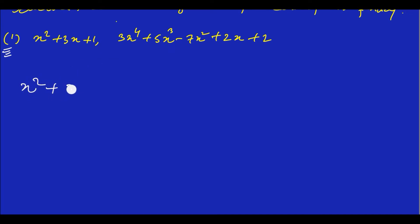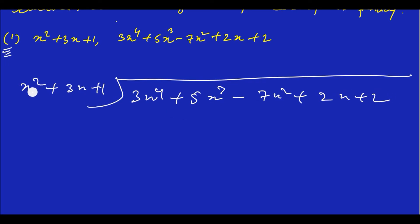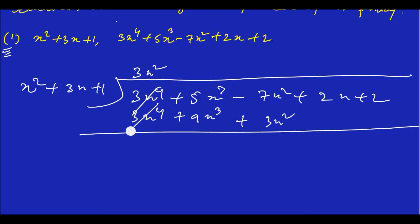The first polynomial is x² + 3x + 1, and the second polynomial is 3x⁴ + 5x³ − 7x² + 2x + 2. We divide: x² into 3x⁴ gives 3x², and 3x into 3x² gives 9x³.